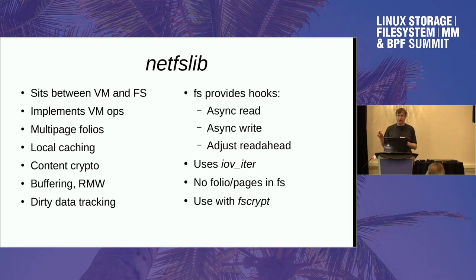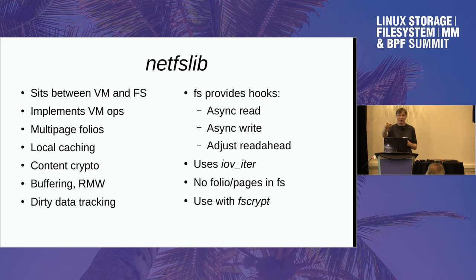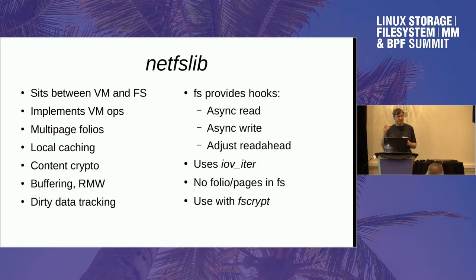The filesystem also provides hooks, if it wants to, to adjust read-ahead. Take Ceph, for example. Ceph has bits of files in two megabyte blocks stored on servers all over the place, and then tries to stitch them together to make something that appears to be a file. So when we're doing read-ahead, we want to adjust it so it falls on Ceph block boundaries, doing two megabyte read-ahead from each block. It also allows making a bigger read-ahead and dispatching them all at the same time, or queuing them up and dispatching in order, which is something CIFS would really like.